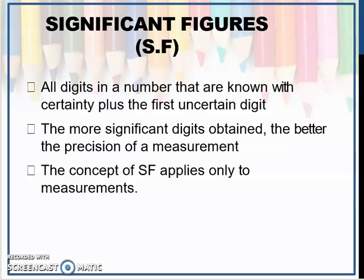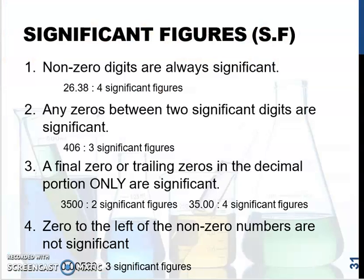So what are significant figures? Significant figures are all digits in a number that are known with certainty, plus the first uncertain digit. The more significant digits obtained, the better the precision of a measurement, and the concept of significant figures applies only to measurement.